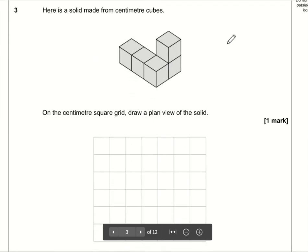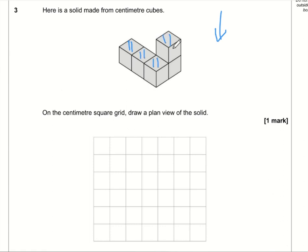Question number three, we want to draw a plan view. So the plan view, that is the bird's eye view. So the view looking down from above. So we'd see this square, this square, this square, and this square, so it would be an L-shaped. So it's three down. So one, two, three. So this represents one, two, three here, and the bottom one has got one to the right. And that is the plan view of that three-dimensional shape.